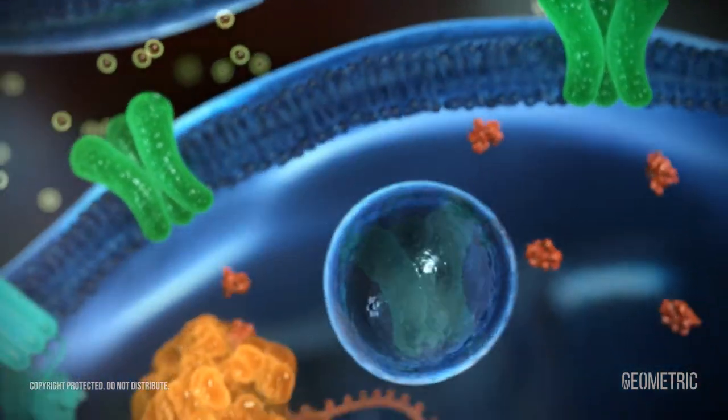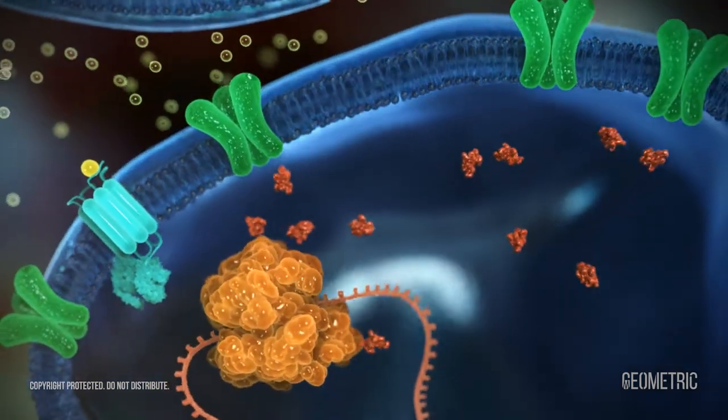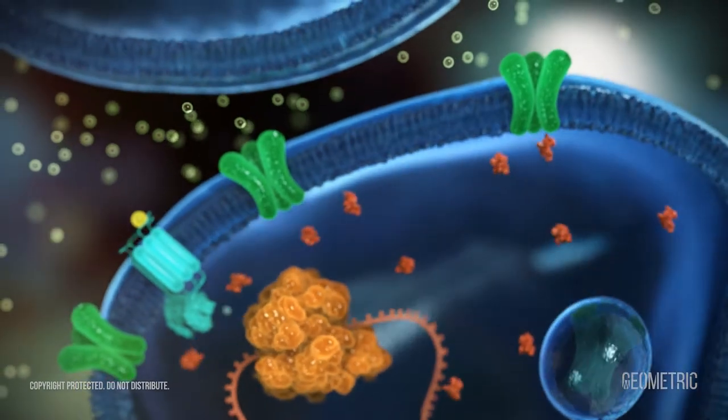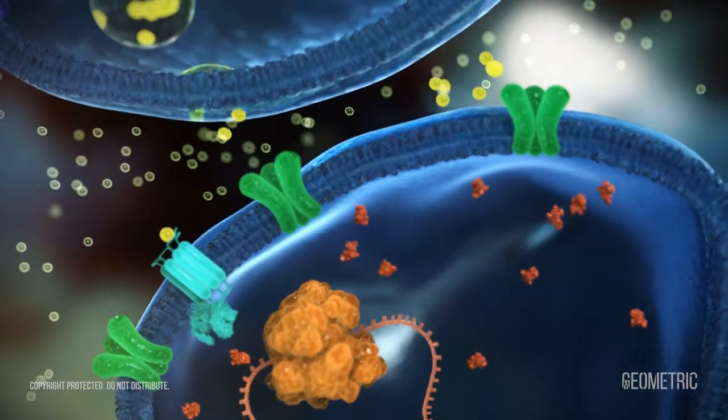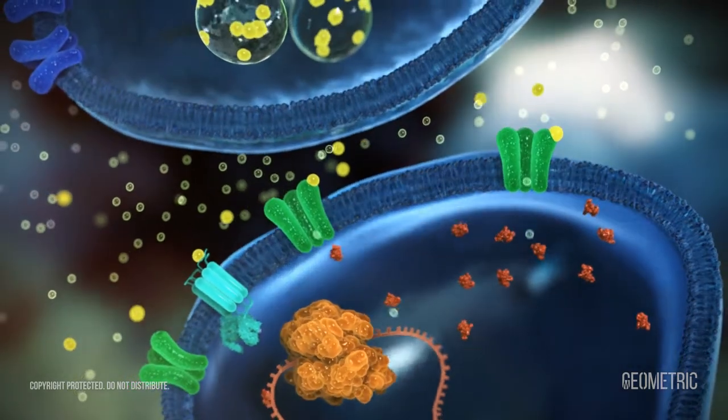The reduction in AMPA and NMDA receptors associated with the loss of FMRP and unchecked protein synthesis following activation of mGlu-R5 are believed to contribute to decreased synaptic strength and plasticity in animal models of Fragile X syndrome.